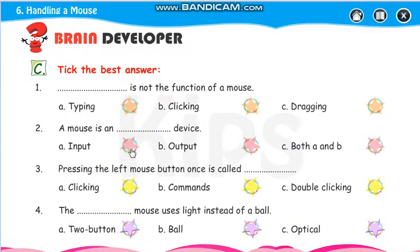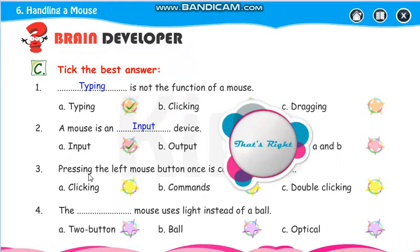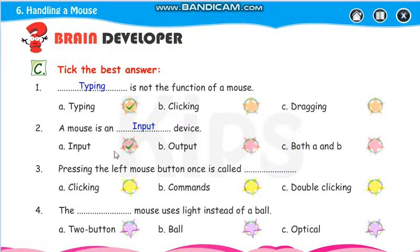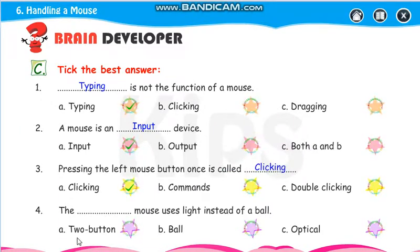Tick the best answer. Which is not the function of a mouse — typing, clicking, or dragging? Typing is not a function of the mouse; it is a function of the keyboard. A mouse is an input device. Pressing the left mouse button once is called clicking. The mouse that uses light instead of a ball is called an optical mouse.